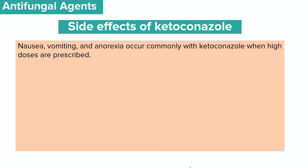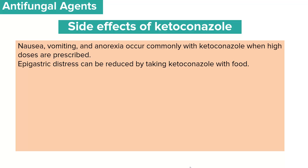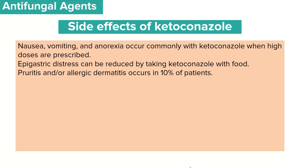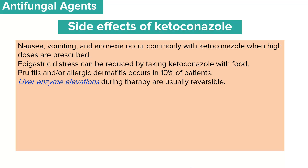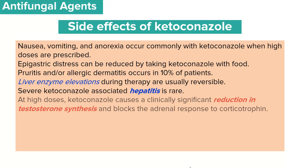The use of ketoconazole may be associated with a number of side effects, mostly linked to the gastrointestinal system when high doses are prescribed — for example, nausea, vomiting, and anorexia. Gastric distress can be reduced by taking ketoconazole with food. Pruritus or allergic dermatitis can occur in a few patients, about 10%, and liver enzyme elevations are usually reversible. The chances of getting ketoconazole-induced hepatitis are rare, but at high doses, ketoconazole is known to cause a clinically significant reduction in testosterone synthesis and also blocks the adrenal response to corticotrophin.